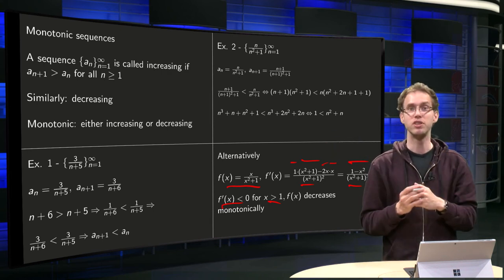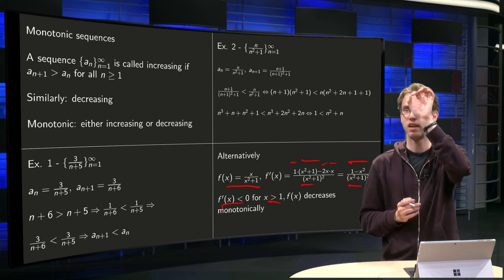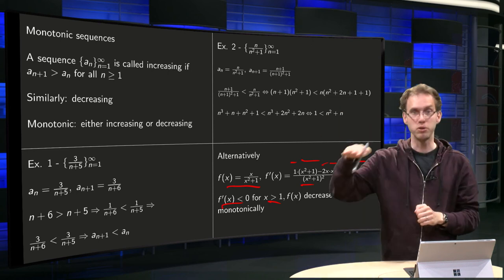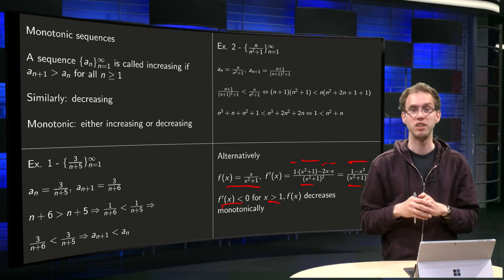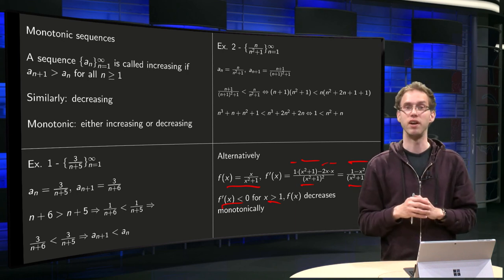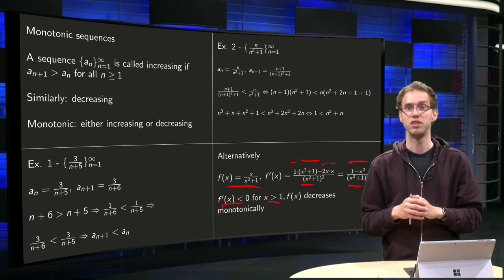So if your function is decreasing, if you evaluate it at n equals 1, 2, 3, 4, etc., those numbers will also be decreasing. So you know that your sequence is also decreasing. So that is an alternative way to show that your sequence is decreasing.